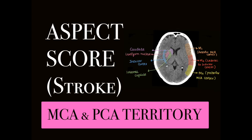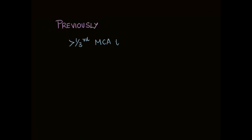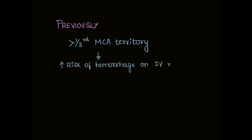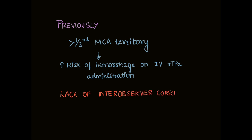Let's discuss ASPECT score, which is used to grade the severity of stroke, commonly used in MCA territory and also for PCA territory stroke. Previously it was said that more than one third of MCA territory involved on NCCT increased the risk of hemorrhage on administering intravenous rtPA as treatment, but this had lack of inter-observer variation, and hence ASPECT score was introduced.